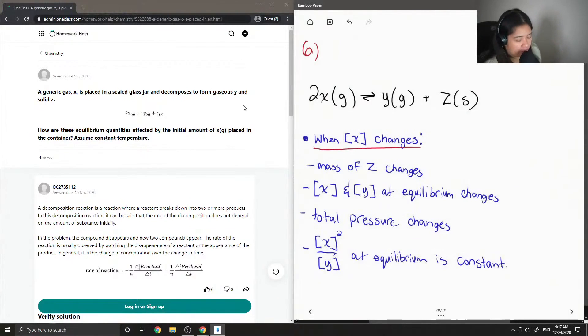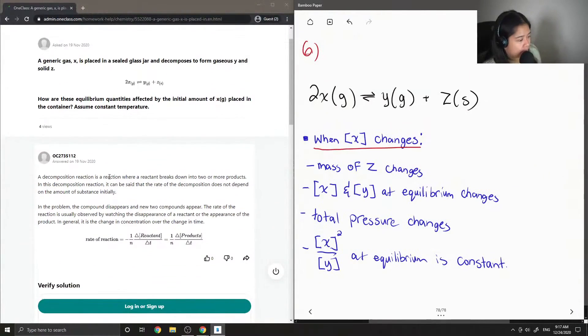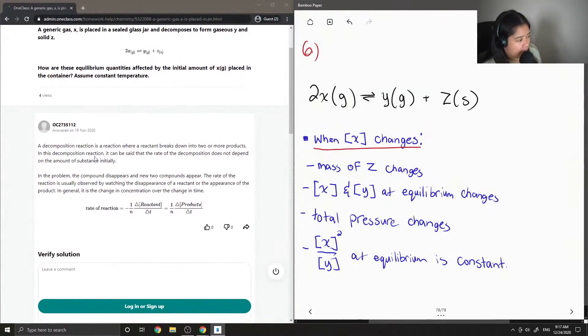Okay, so let's see what the junior tutor said. A decomposition reaction is a reaction where a reactant breaks down into two or more products. In this decomposition reaction, it can be said that the rate of the decomposition does not depend on the amount of substance initially.